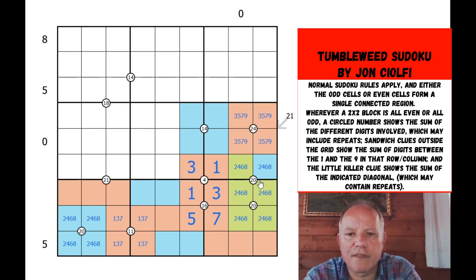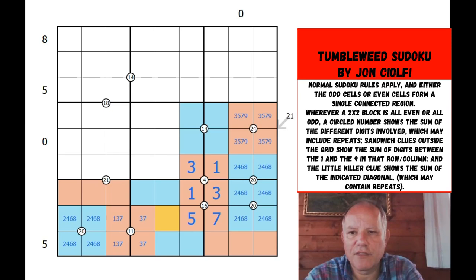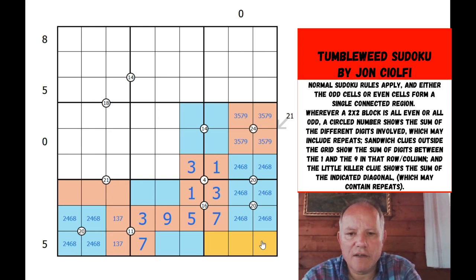We've obviously established from the coloring that it's the odds that join up, so we know that now. These can't contain a one — I should have done that earlier — which makes this a nine.